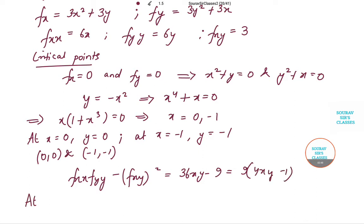Now at (0,0), fxx*fyy minus fxy whole square will be equal to minus 9 which is less than 0. So we can say that (0,0), now this is a situation of saddle point. So this particular point coordinate (0,0) is a saddle point.